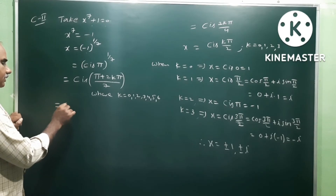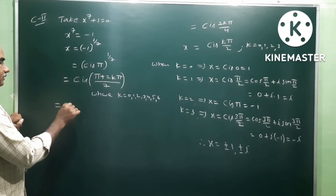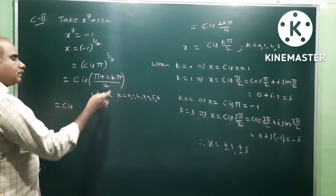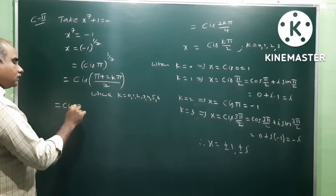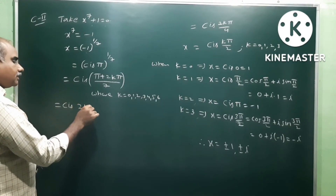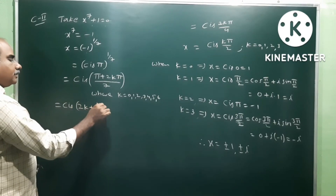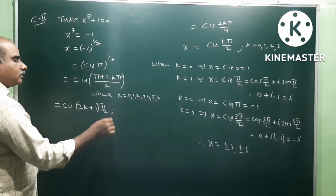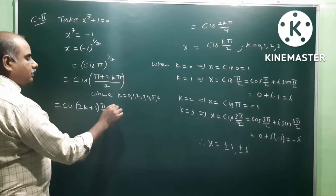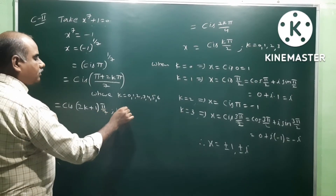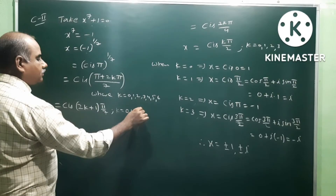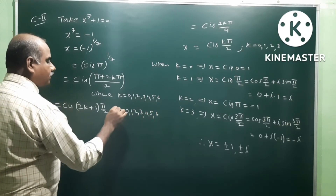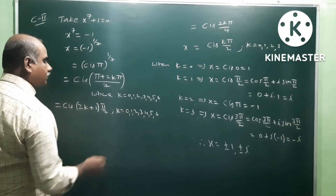This can be written with π as common: cis of 2k plus 1 into π by 7, where k is equal to 0, 1, 2, 3, 4, 5, 6.